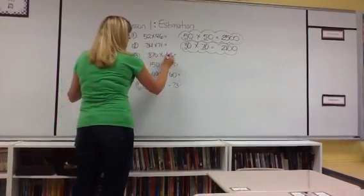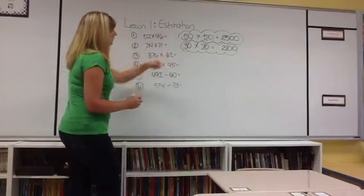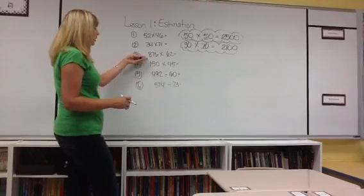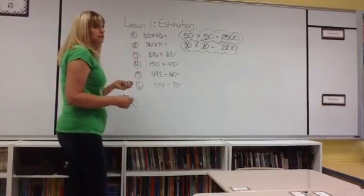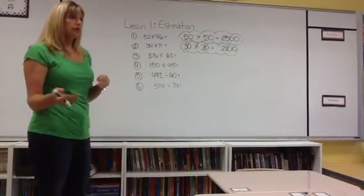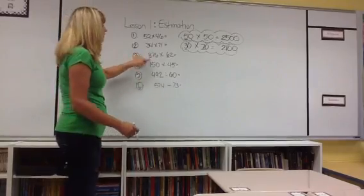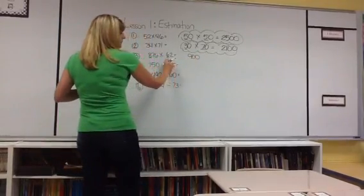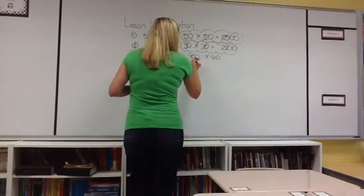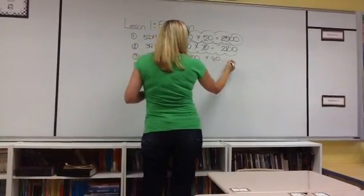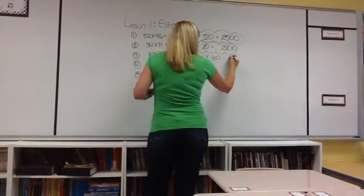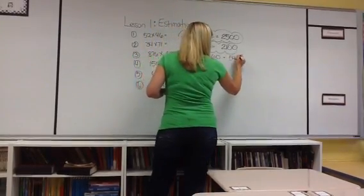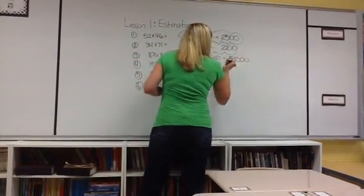When I'm talking about front-end estimation, as you see in these two examples, we're going to look at the 8 and we're going to decide if this number, 876, should round to 800 or 900. And it is closer to 900 times 60. 9 times 6 is 54, so 900 times 60 is 54,000.